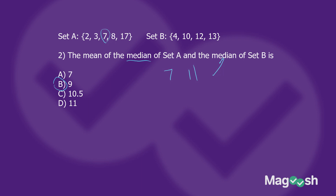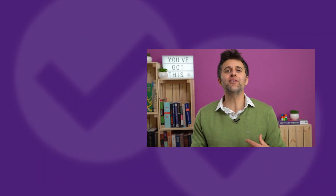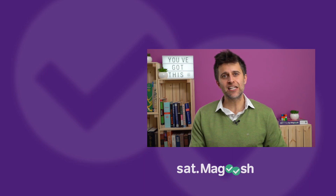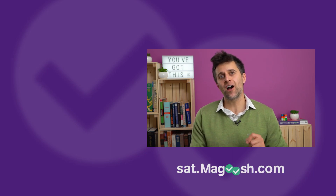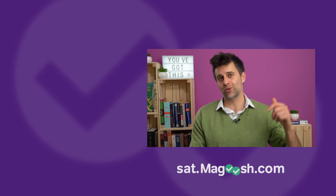There you have it: we talked about median, which is the middle number; mode, which isn't likely to show up on the test but is the number that appears most in a set; and the difference between median and mean and how not to confuse them. That is median and mode the way they will show up on the SAT. For more tips and strategies, click on some of the videos to my left, or check us out at sat.magoosh.com — the link is in the description below.